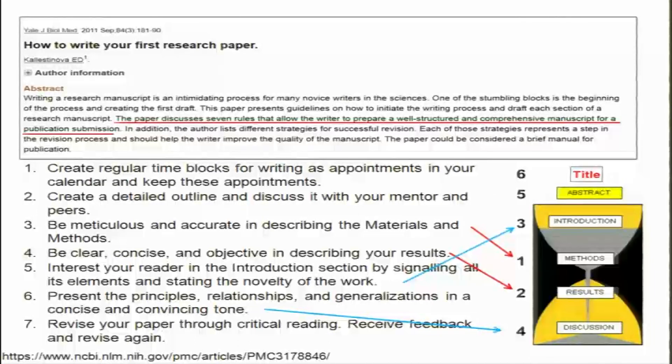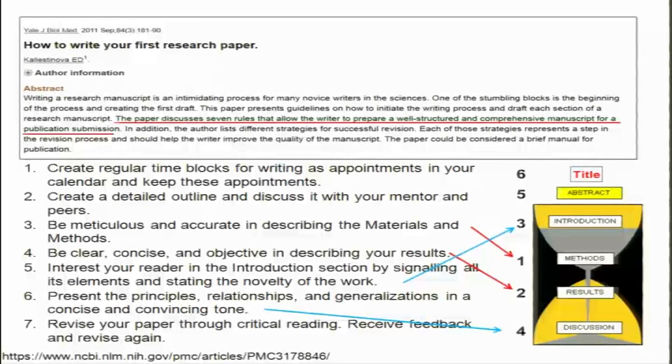We started our discussion on the scientific paper with abstract — how do you write an abstract. But what I also want to tell you is that when you write a research paper you do not start with the abstract. You basically start with the methods, because it is extremely difficult to start writing your abstract — the abstract is a summary of the entire paper.